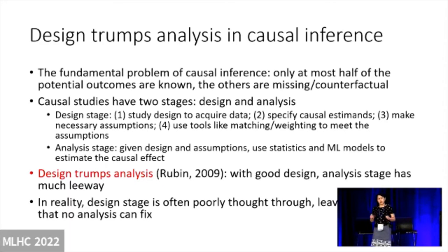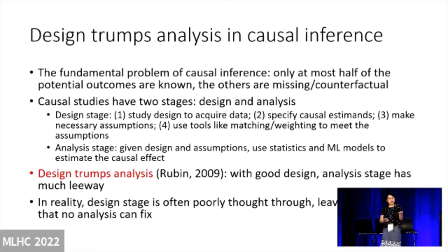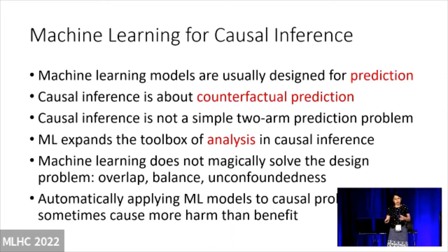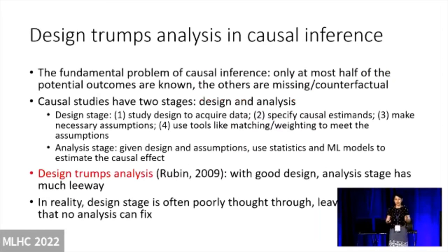To make that point, consider this basic concept. In causal inference, if you're familiar with the potential outcomes framework, the fundamental problem is that you want to compare: had this patient been treated by treatment A versus treatment B, what's the difference? But in reality, you can only treat the patient once — either A or B. So the other side is counterfactual. You're actually not doing simple prediction; you're doing so-called counterfactual prediction. This is slightly different. Machine learning models are usually designed for prediction, but causal inference is about counterfactual prediction. It's not simply a two-arm prediction problem — because the key thing is you want to compare apples to apples, oranges to oranges. Confounding messes that up.